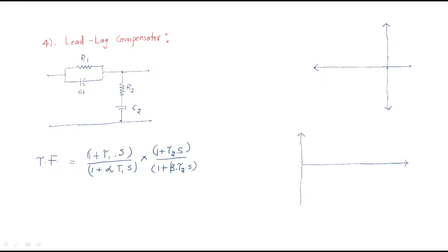Always remember: the parallel combination of resistor and capacitor is the lead circuit, and the series combination is the lag circuit. For the pole-zero configuration of the lead-lag compensator: since lead is dominant first, in the lead circuit the zero is dominant — so zero comes first, then the pole. For the lag section, zero starts first and ends with a pole.